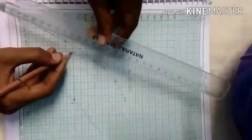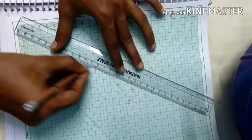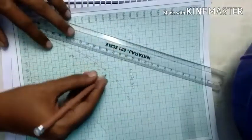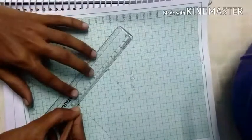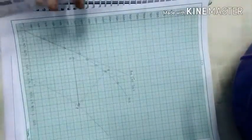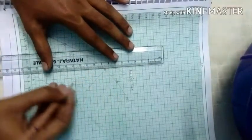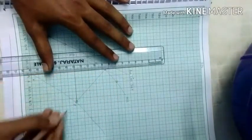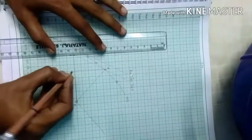With point Q, draw a line parallel to the air-gap line which cuts the OCC curve at point R. Join PR and then draw a perpendicular line from R touching the PQ line.